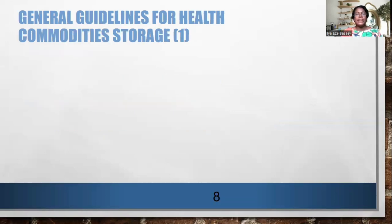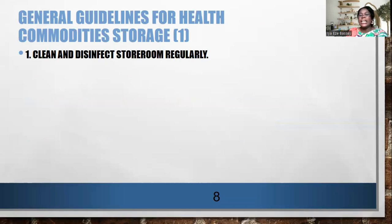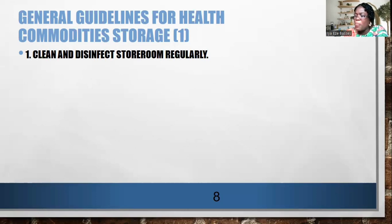The first storage guideline is to clean and disinfect the store room regularly. Rodents and insects like termites and cockroaches love health commodities and eat cartons and inner packaging. You need to keep your room pest-free using insecticides, pesticides, or biological control like cats. Also, try not to eat in the warehouse, as food pieces may encourage pests. Keep your store room clean — it's cost-effective and requires only energy.